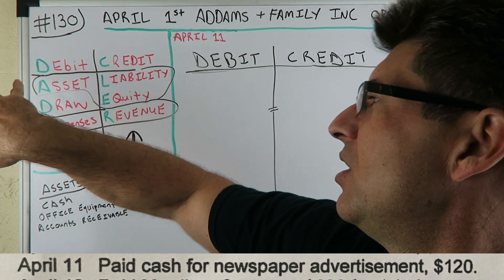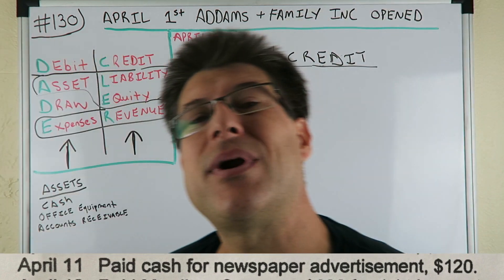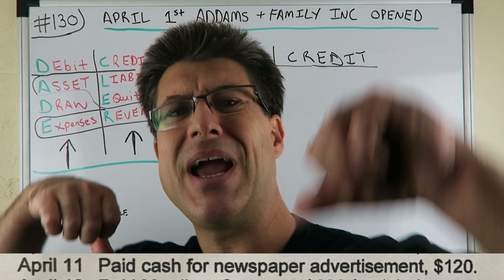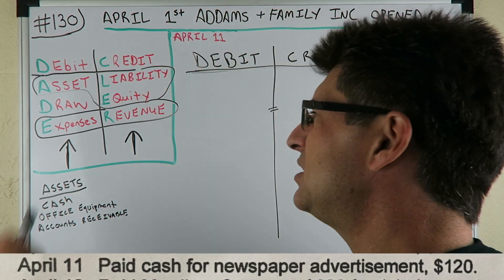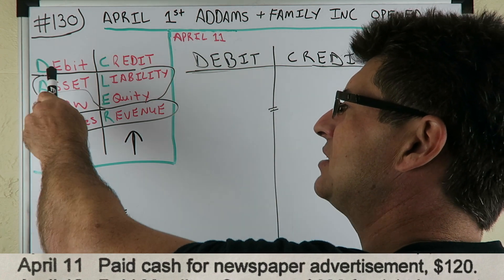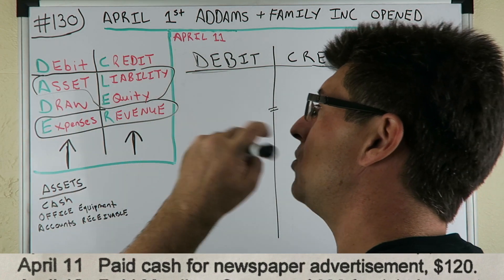DC Adler — this is what I'm known for, besides being strongest in the game. DC Adler: Debit, Credit — Asset, Draw, Expense, Liability, Equity, Revenue.